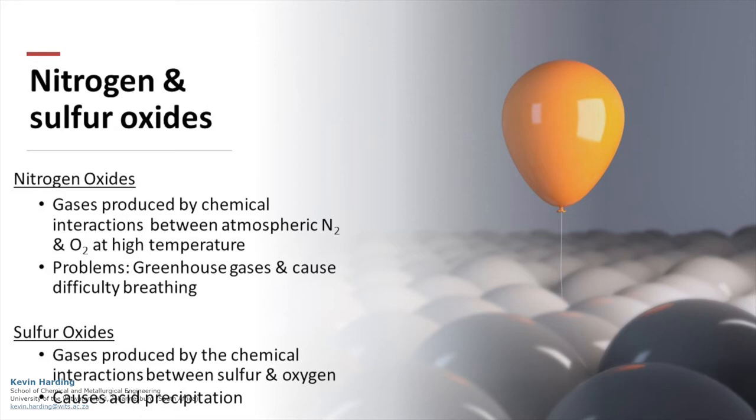Nitrogen and sulfur oxides form between interactions with oxygen at high temperature. Nitrogen oxides are also greenhouse gases, but can also cause difficulty in breathing. Sulfur and nitrogen oxides can also lead to acid rain.